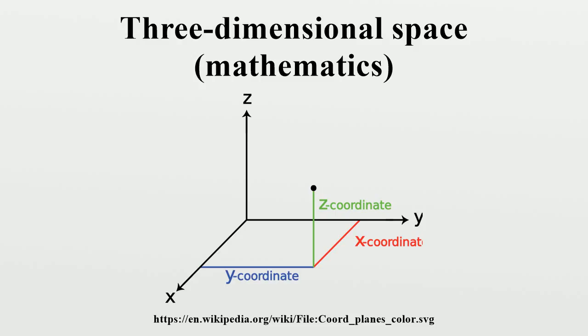Any three directions can be chosen, provided that they do not all lie in the same plane. In physics and mathematics, a sequence of n numbers can be understood as a location in n-dimensional space. When n equals three, the set of all such locations is called three-dimensional Euclidean space.